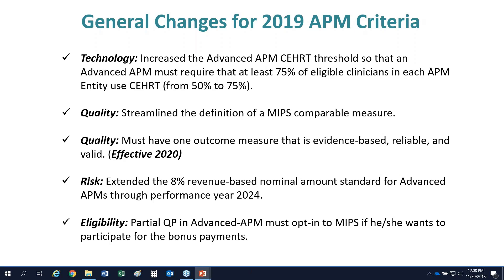Changes in 2019 occurred in two out of three of these areas. On technology, the threshold for an APM to participate has risen from 50% to 75% of providers needing to be on certified EHR technology. On the quality side, there was some streamlining of measures, and CMS is trying to ensure quality metrics for specialized APMs are comparable to what's seen in the MIPS program.